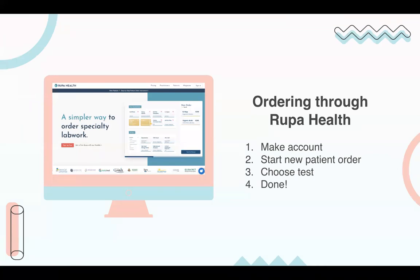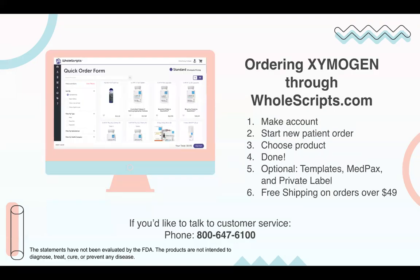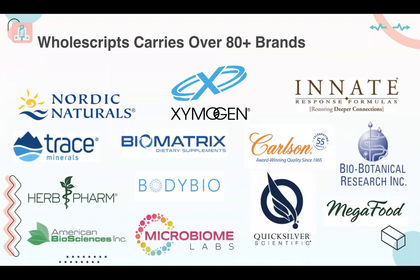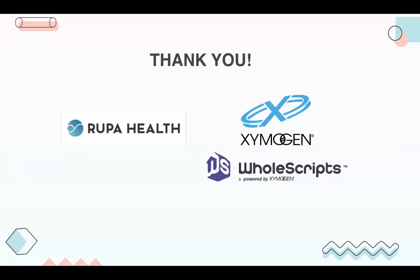Thank you so much for attending this webinar today. This was a very brief overview of the GI Map, and thank you again to Rupa Health for hosting. It's so easy to order on Rupa Health — make an account, start a new patient order, choose your test, and you are done in under about 90 seconds. Ordering Zymogen through WholeScripts has never been easier as well. WholeScripts currently carries over 80-plus brands that you can utilize in your functional medicine practice. Thank you again to Rupa Health, Zymogen, and WholeScripts for hosting this webinar. We're going to open it up now for some Q&A.